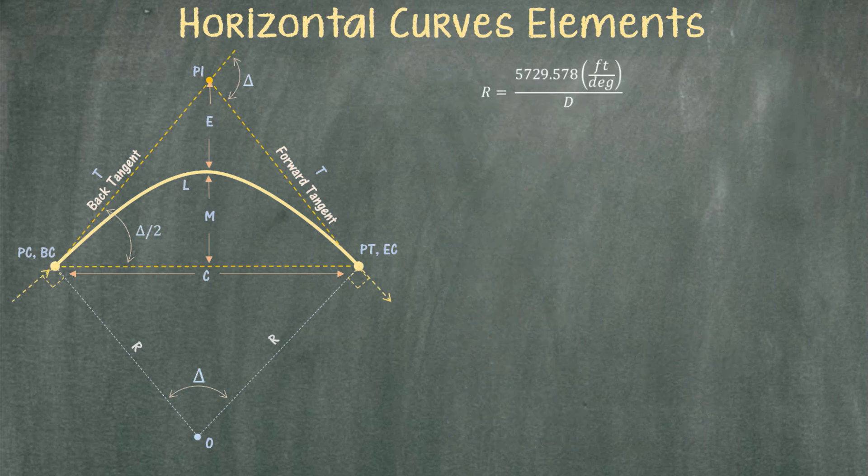The first equation is used to determine the radius. One thing to pay close attention to is that the constant 5729.578 has units of feet per degree. Having said that, you know that the degree of curve needs to be entered in degrees and not in radians, so that the result will be in feet.